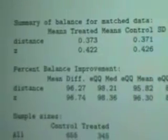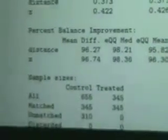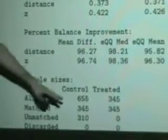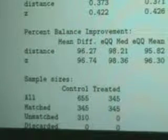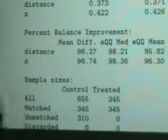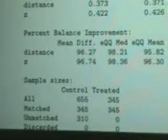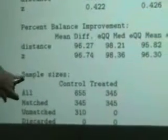And then so at the bottom here is just telling us that we had originally 1,000 observations of the simulation. Originally we had 655 control, 345 treated. And essentially we just dropped 310 of the control group that didn't come up with a good match in the matching algorithm.